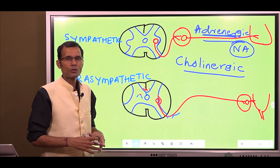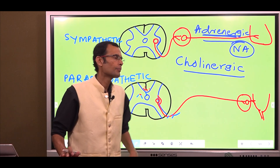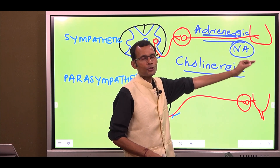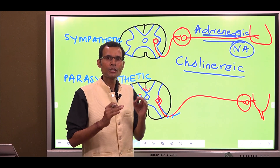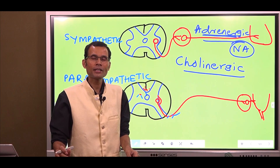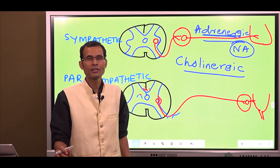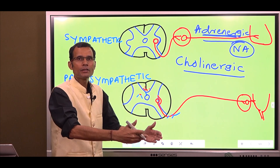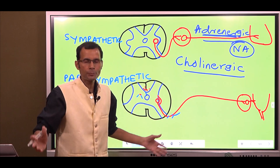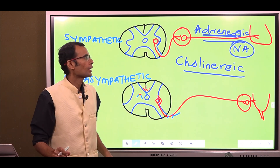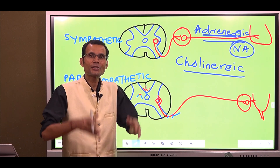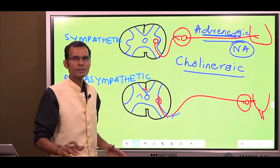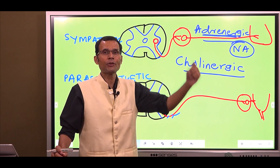That brings us to the last point. There are some sympathetic nerves which do not release noradrenaline, and those are called sympathetic cholinergic nerves. That may add to the confusion, but to be clear: sympathetic nerves generally release noradrenaline and are adrenergic nerves at most places — but there is an exception. The exception is sweat glands. Remember the case of excessive sweating — hyperhidrosis. There are certain sympathetic cholinergic fibers as well.